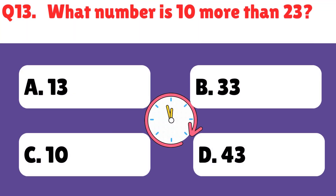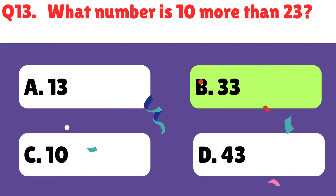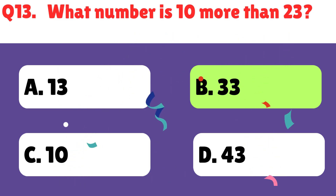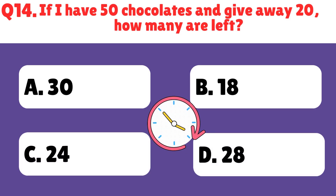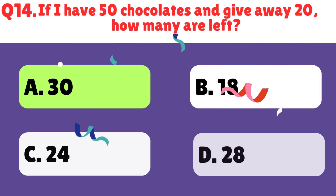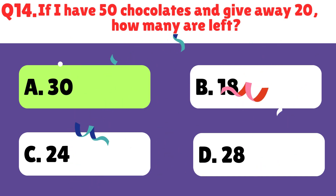What number is 10 more than 23? The right answer is 33. If I have 50 chocolates and give away 20, how many are left? The right answer is 30.